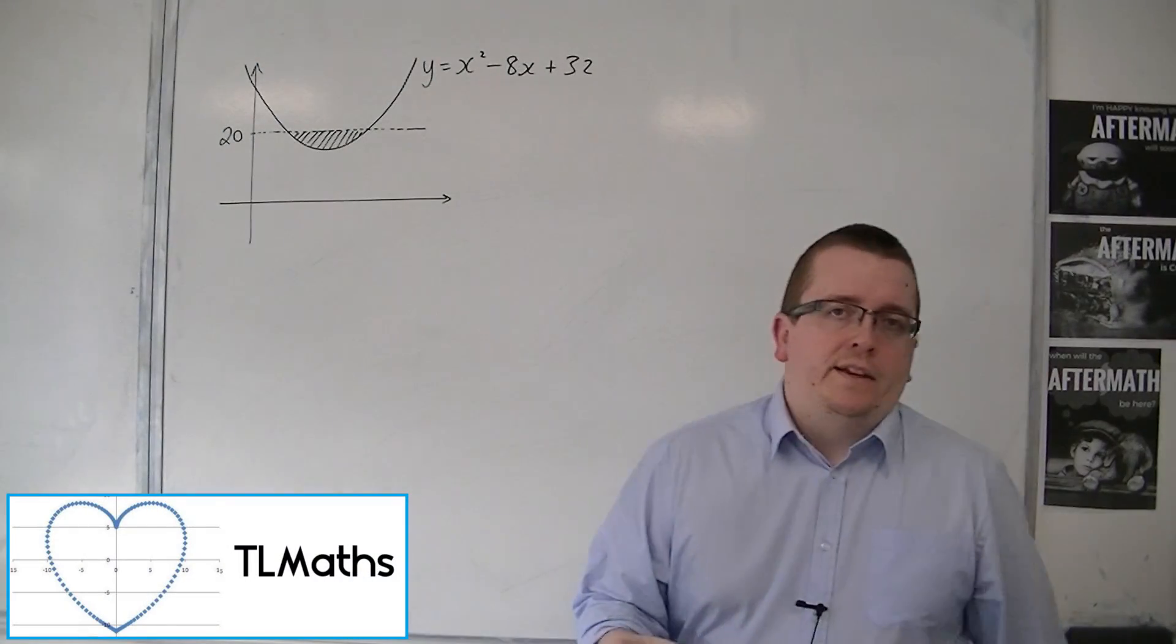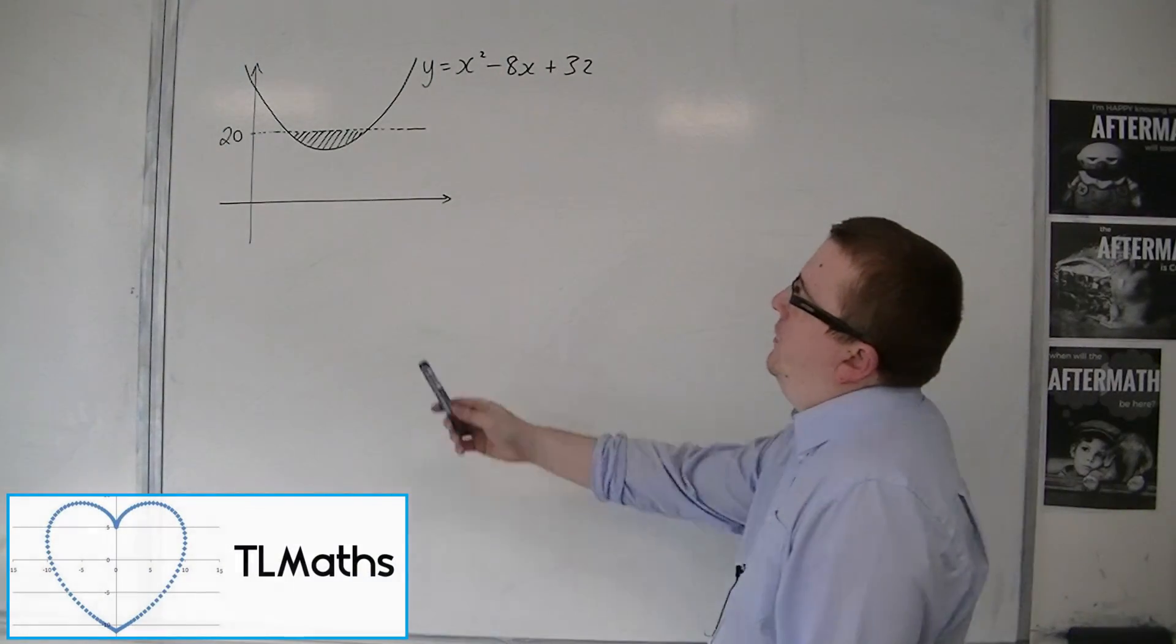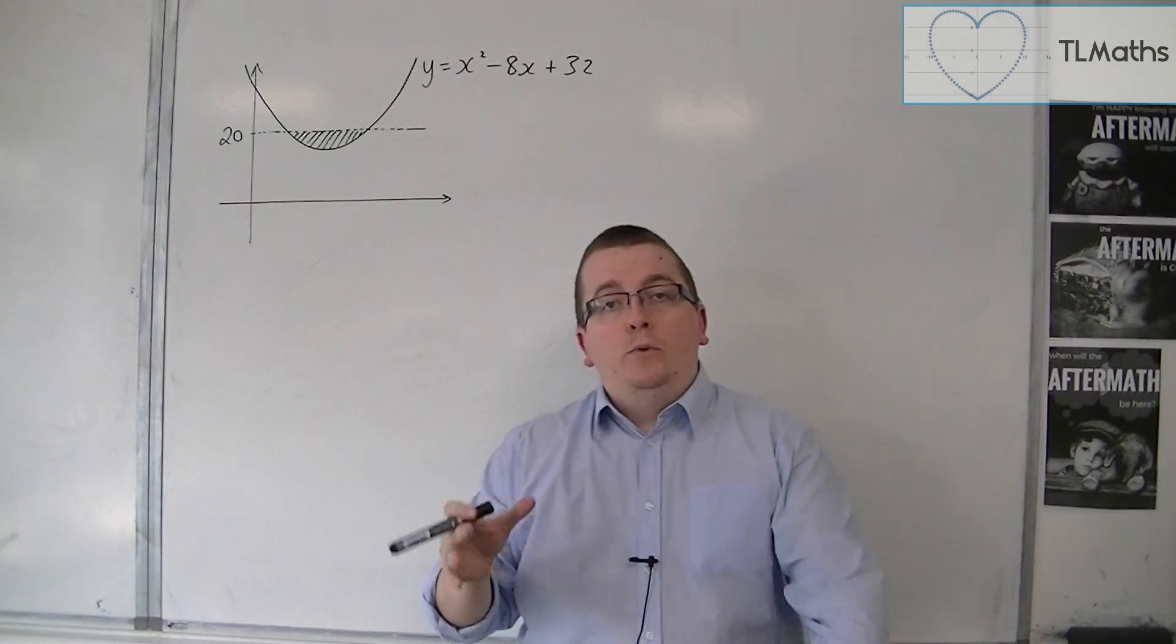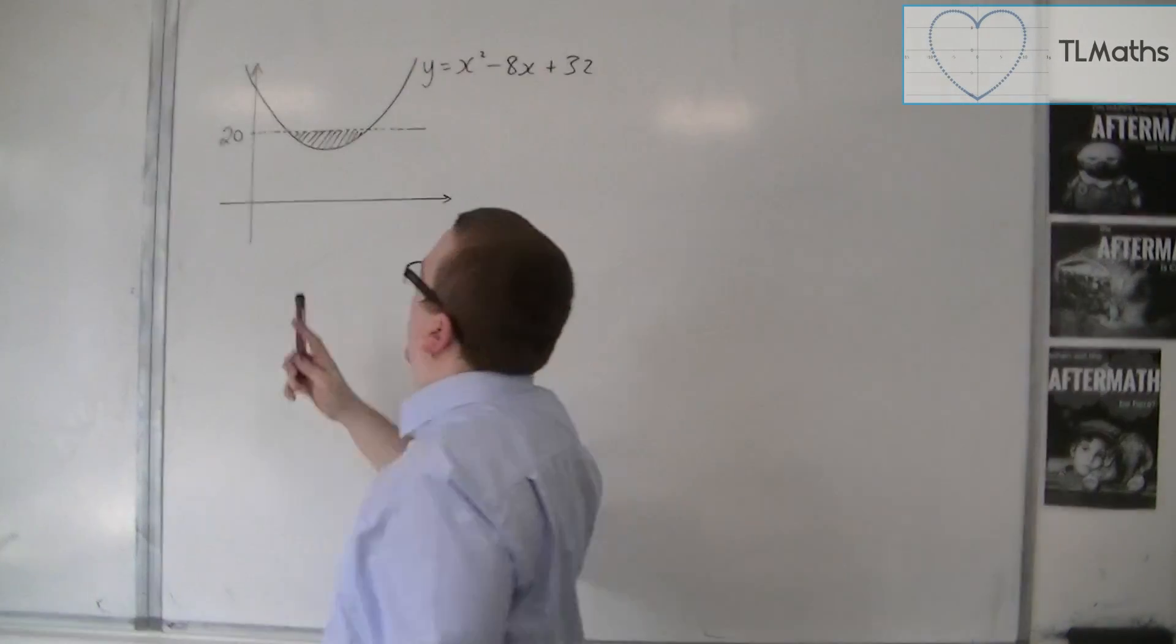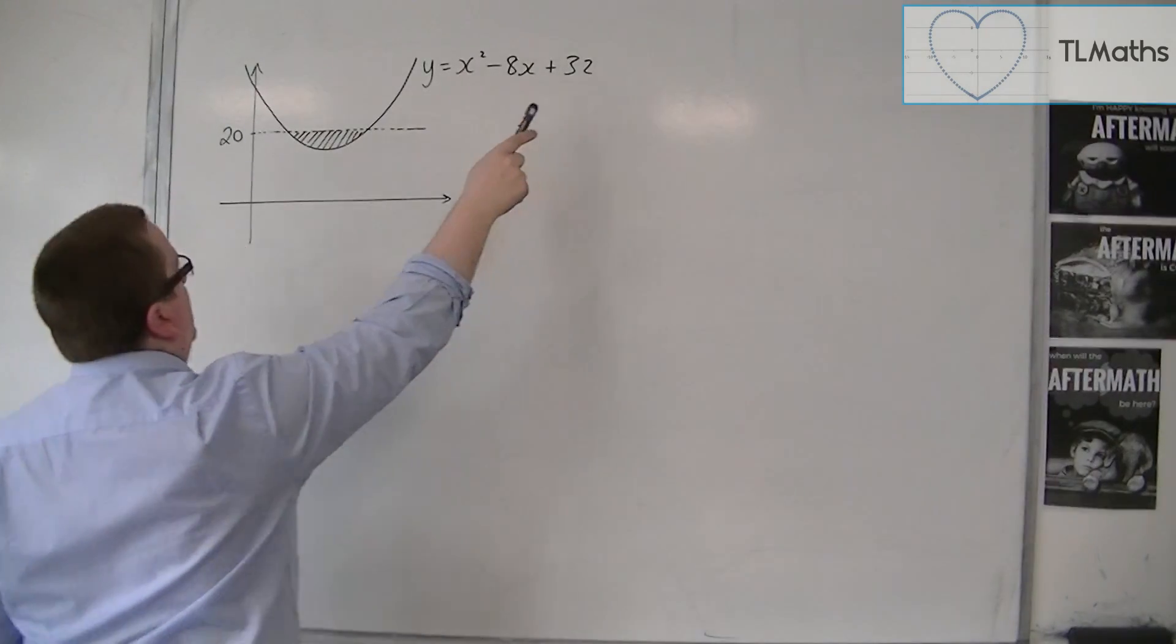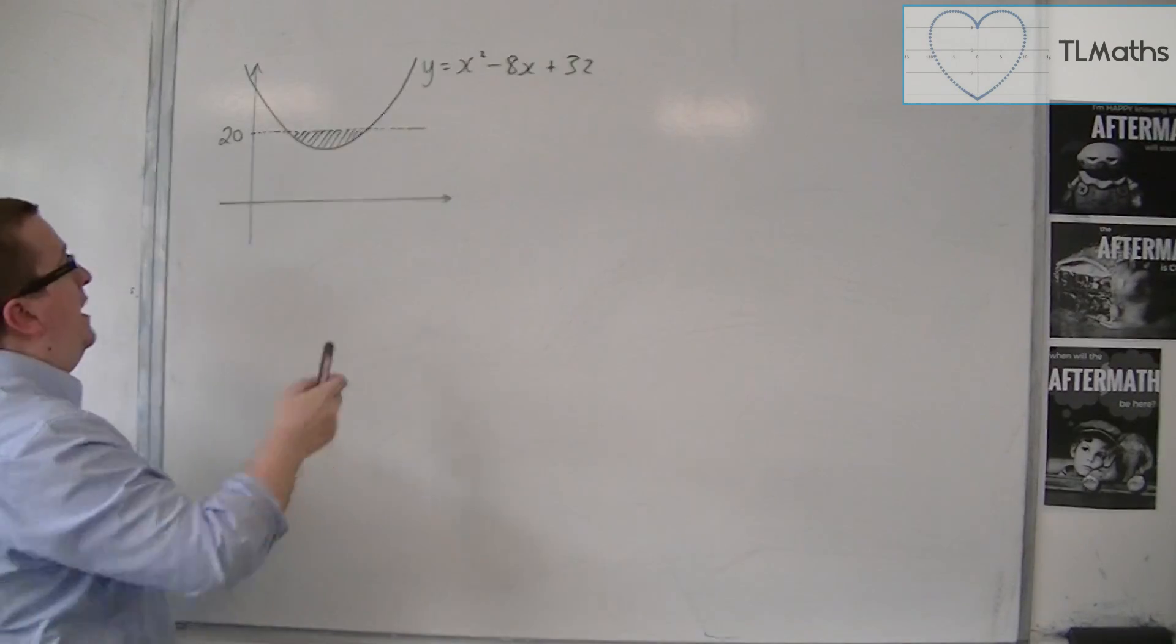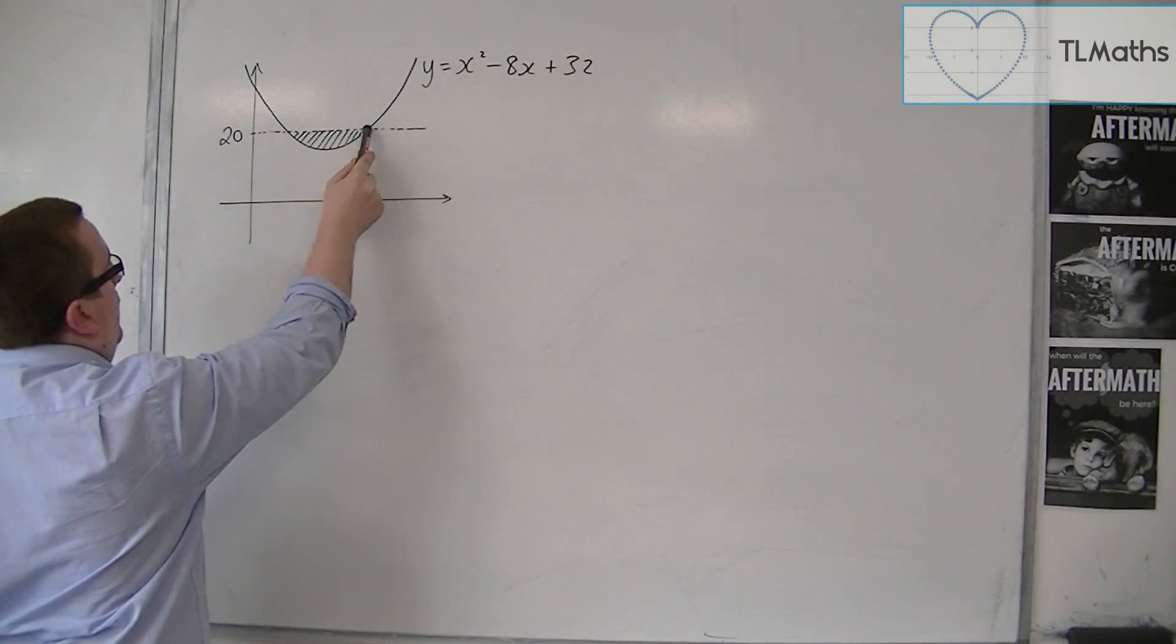So we're going to look at a slightly more complicated example here. We want to find this area, so this shaded area. Now we know that the curve y is equal to x squared minus 8x plus 32 is intersecting here with y is equal to 20. So we know that these points are when y is 20.